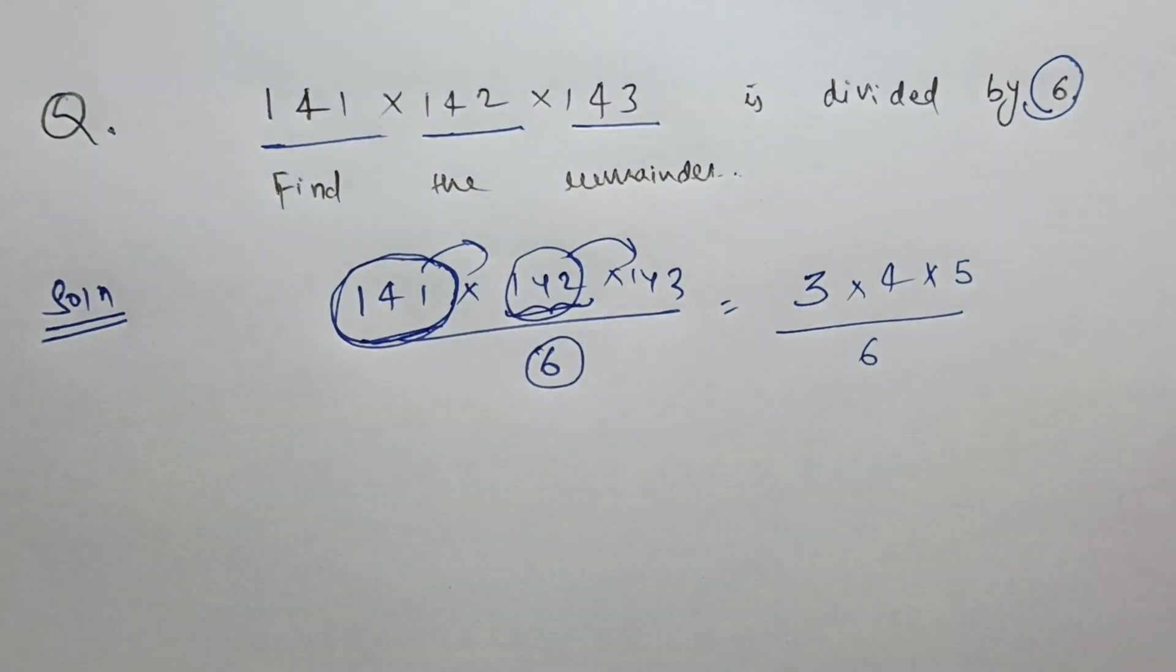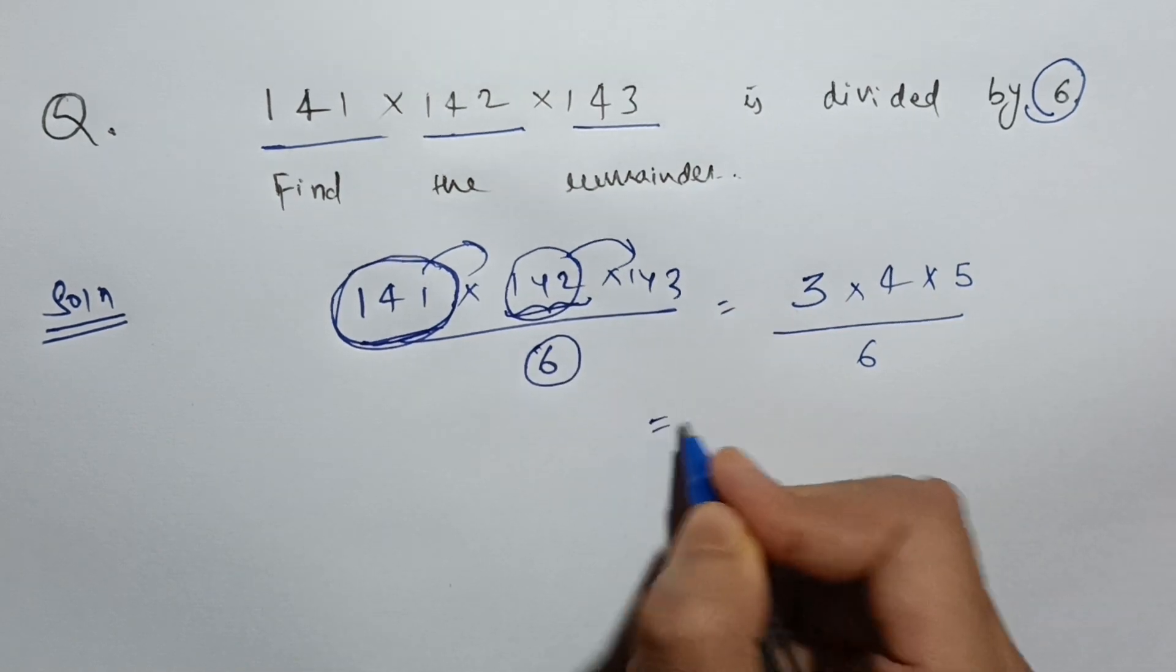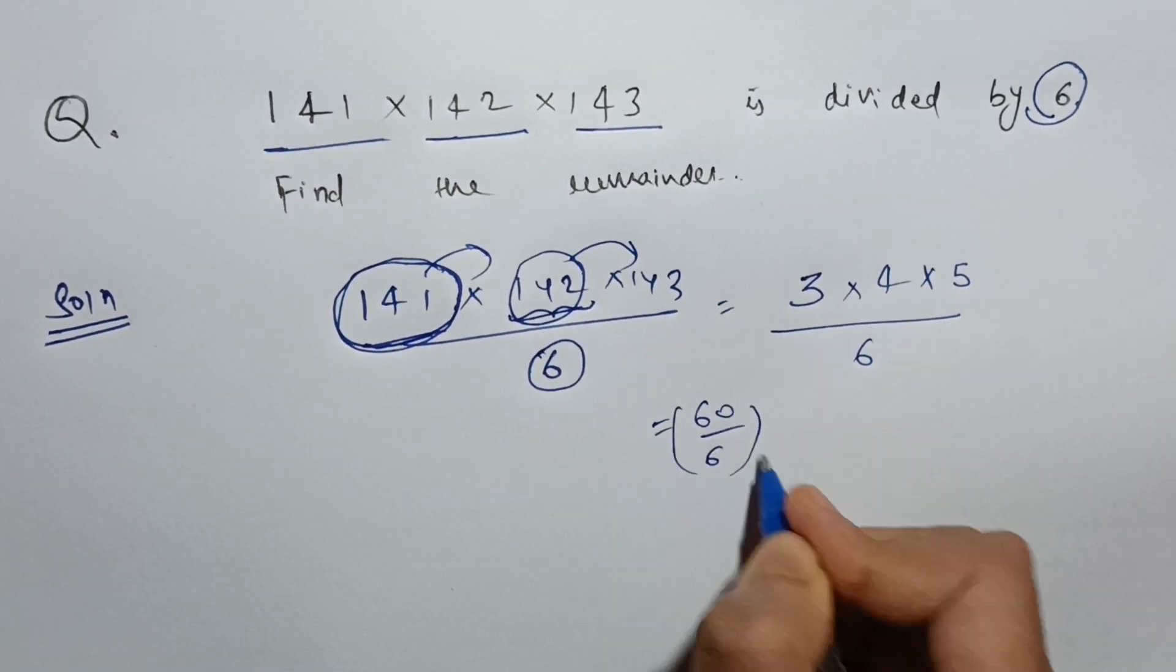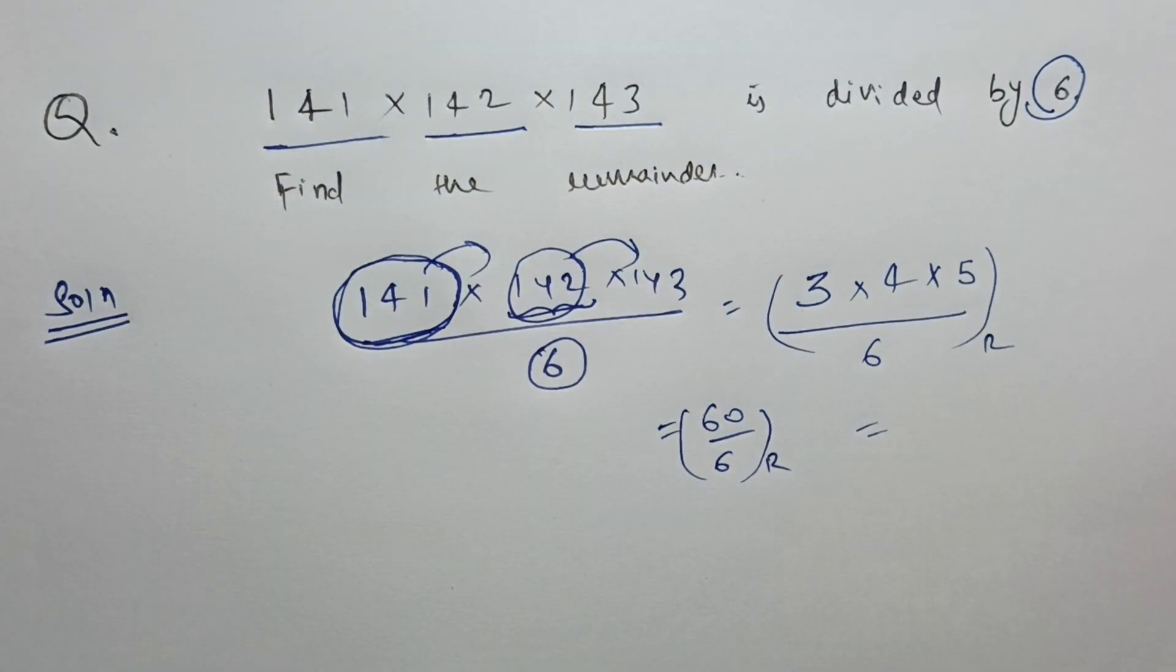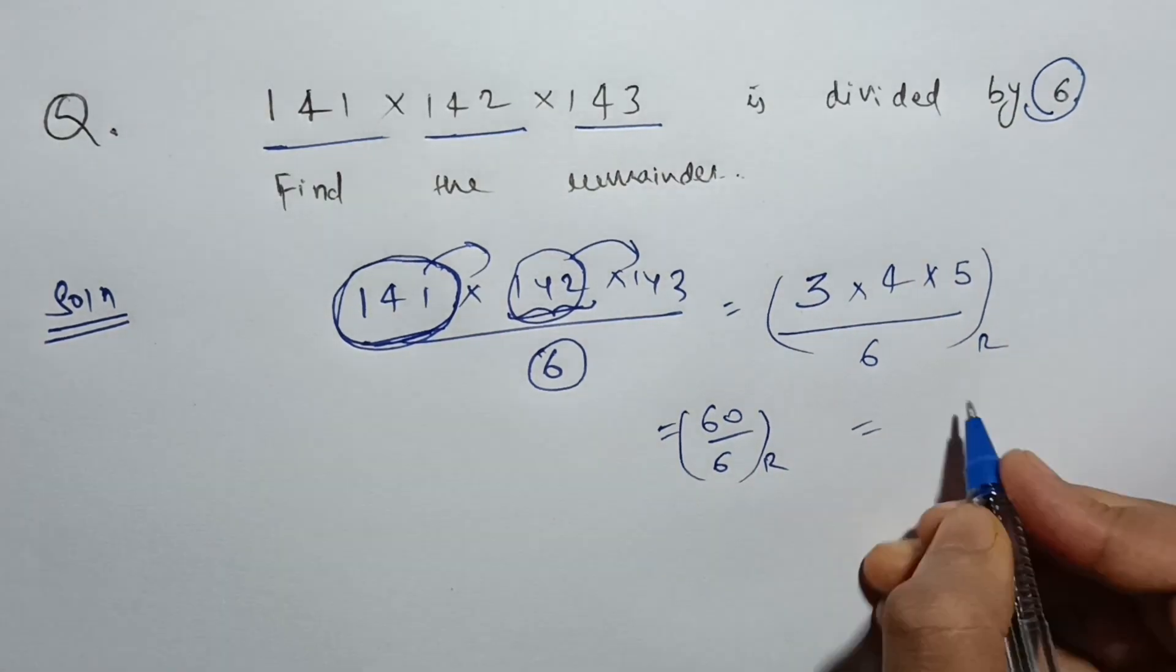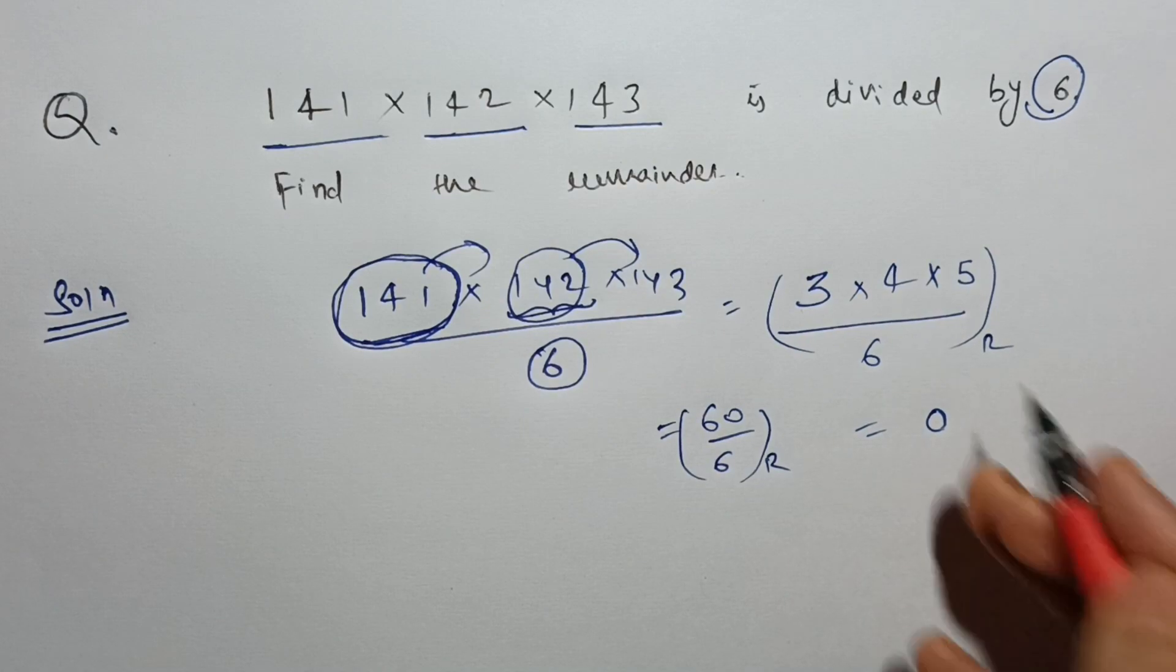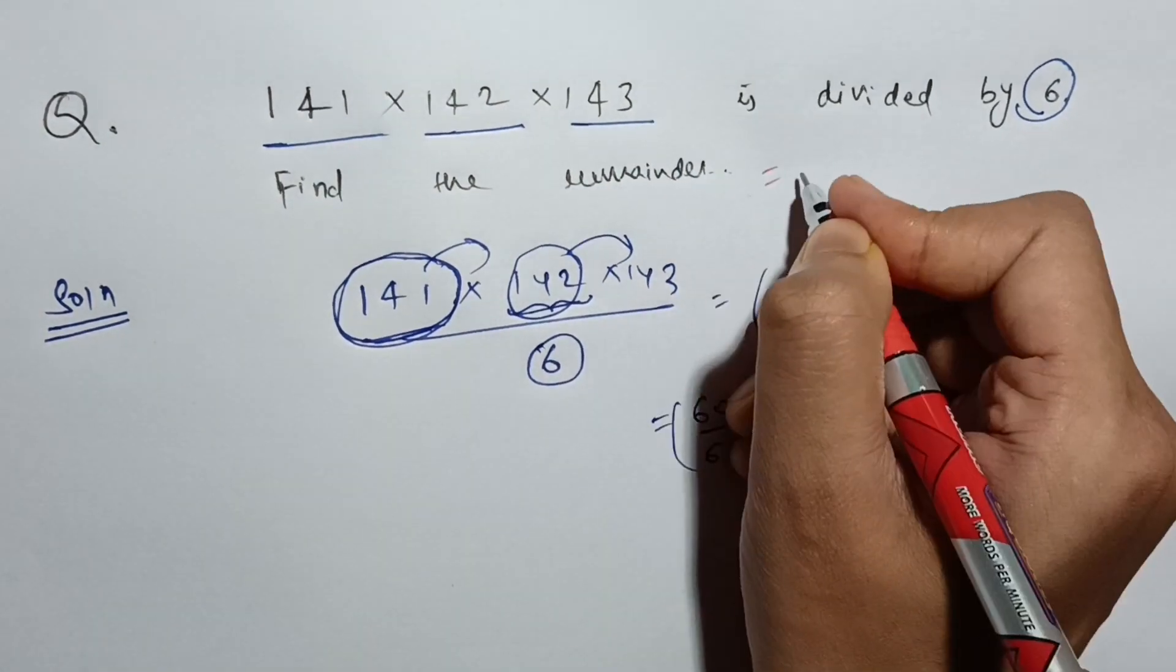So 3 × 4 × 5 ÷ 6. Now 3 × 4 is 12, and 12 × 5 is 60. So 60 ÷ 6, what is the remainder? If I divide 60 by 6, this is completely divisible, which means the remainder is 0. So finally our answer is 0.